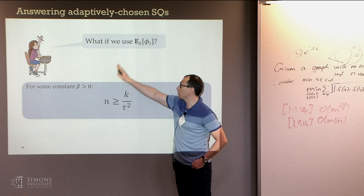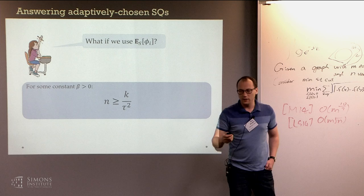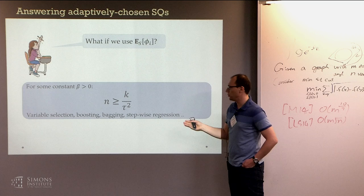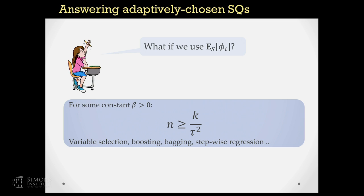Those are not even unusual queries — they're basically the queries that would arise in variable selection, boosting, bagging, stepwise regression, and so on. As you can see, this is not much better than conservative data splitting. So using the empirical mean can in principle be very bad. The natural question is: can one do better?